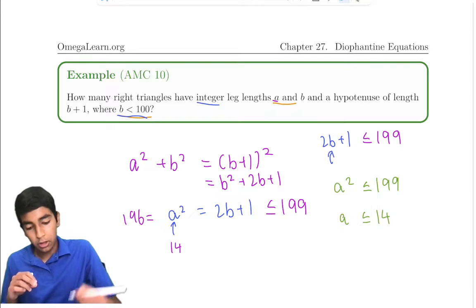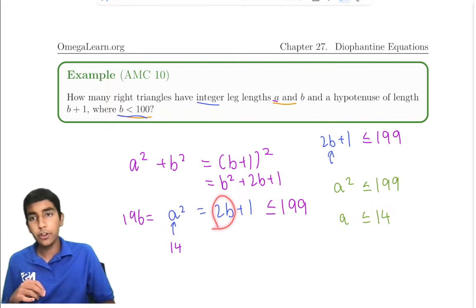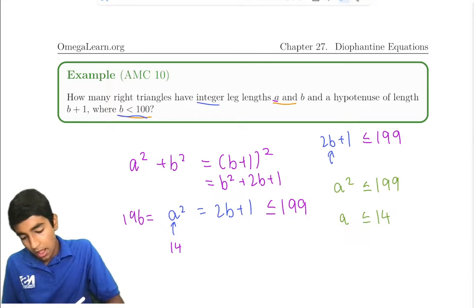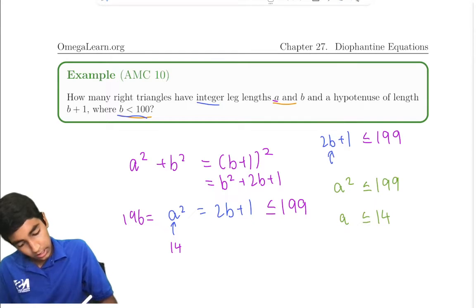Because this is a multiple of 2, and this is an additional 1. So this is not allowed. An even number can't equal an odd number.